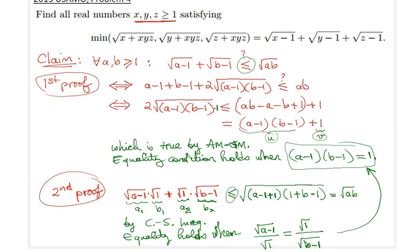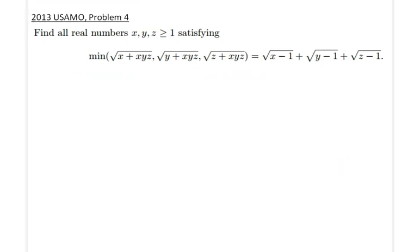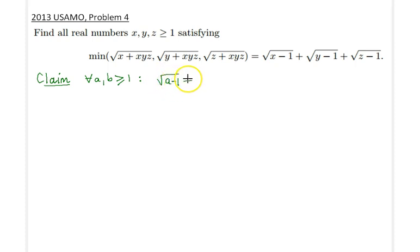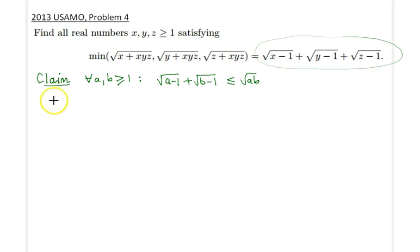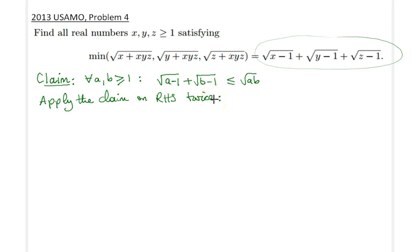We're done with the first step. Now that I have this key lemma, I can apply it twice. To remind you: for all a, b ≥ 1, we proved that √(a−1) + √(b−1) ≤ √(ab). Let's apply it to the right-hand side of our equality in a special order, as you will see next.